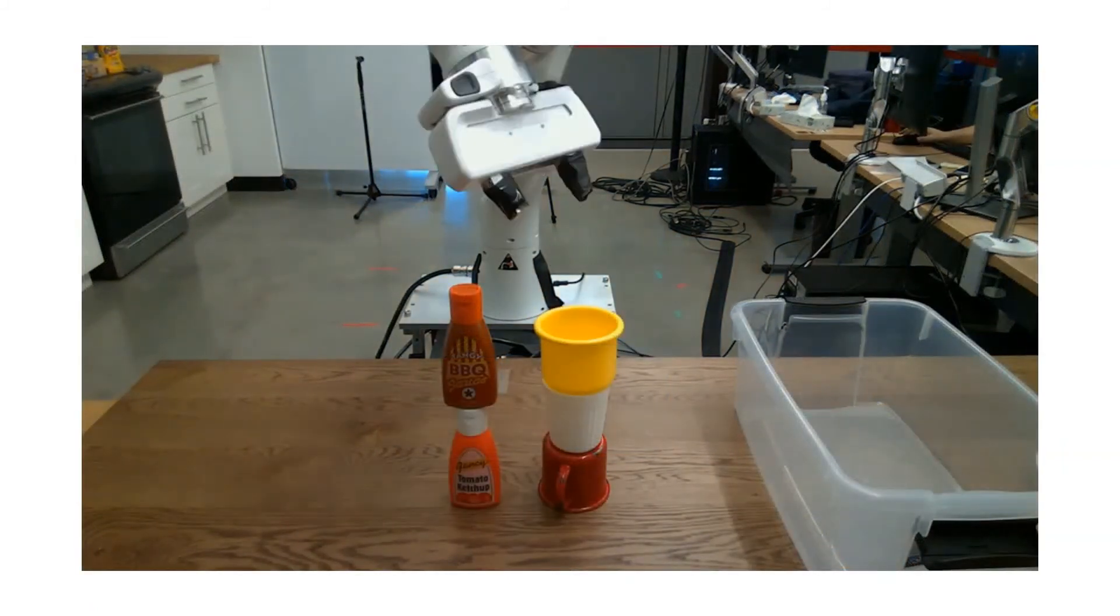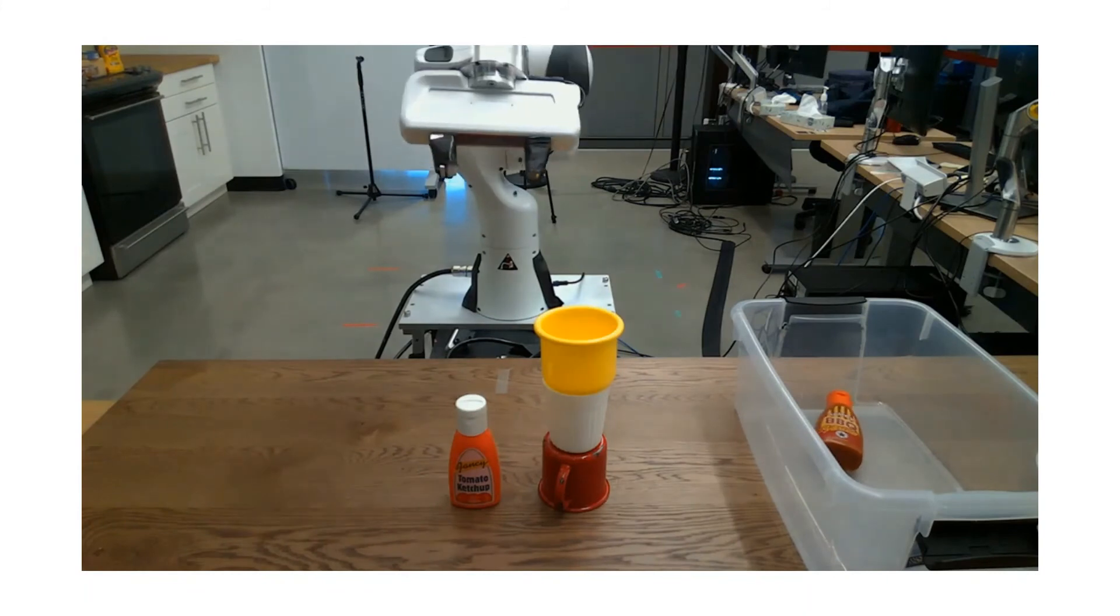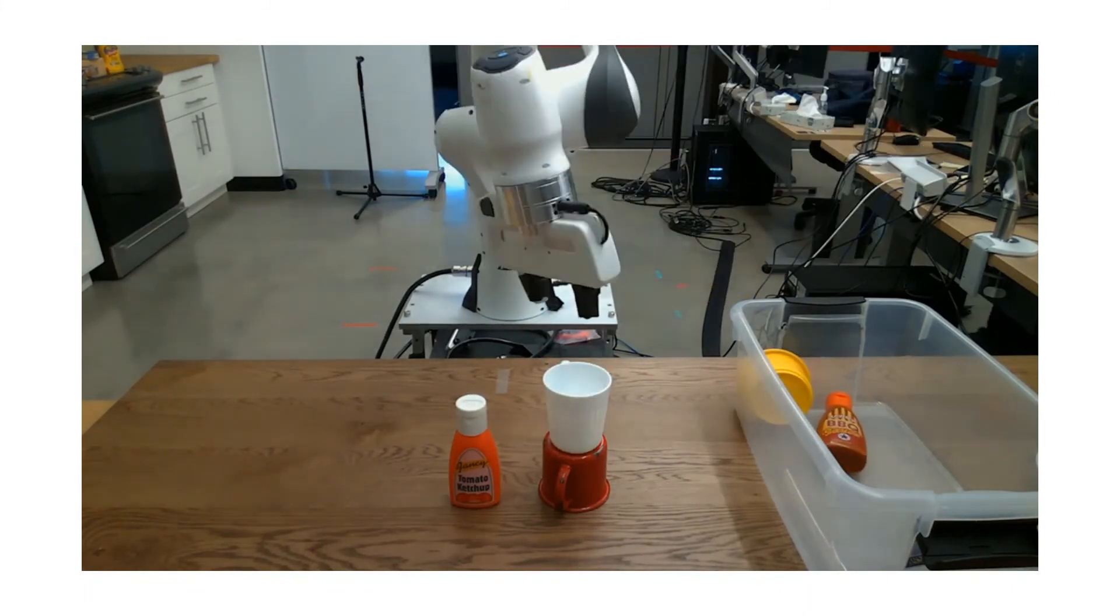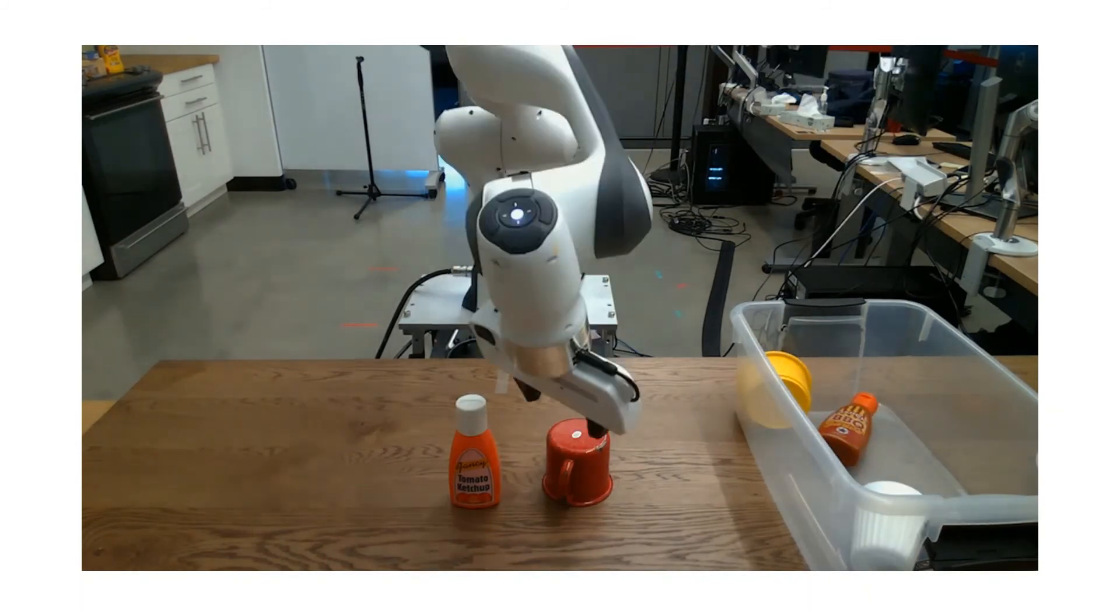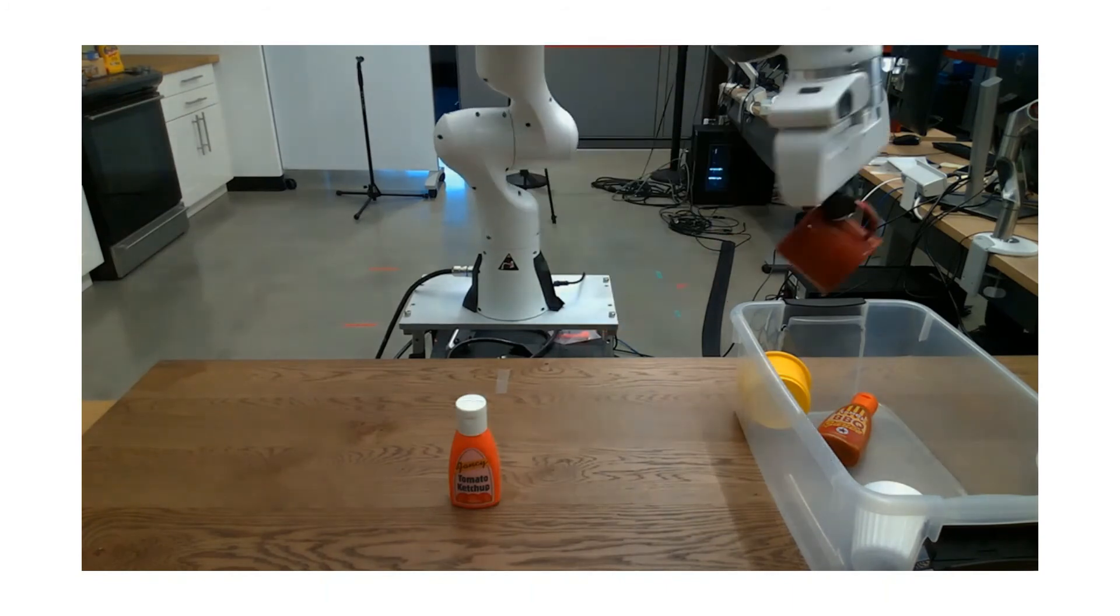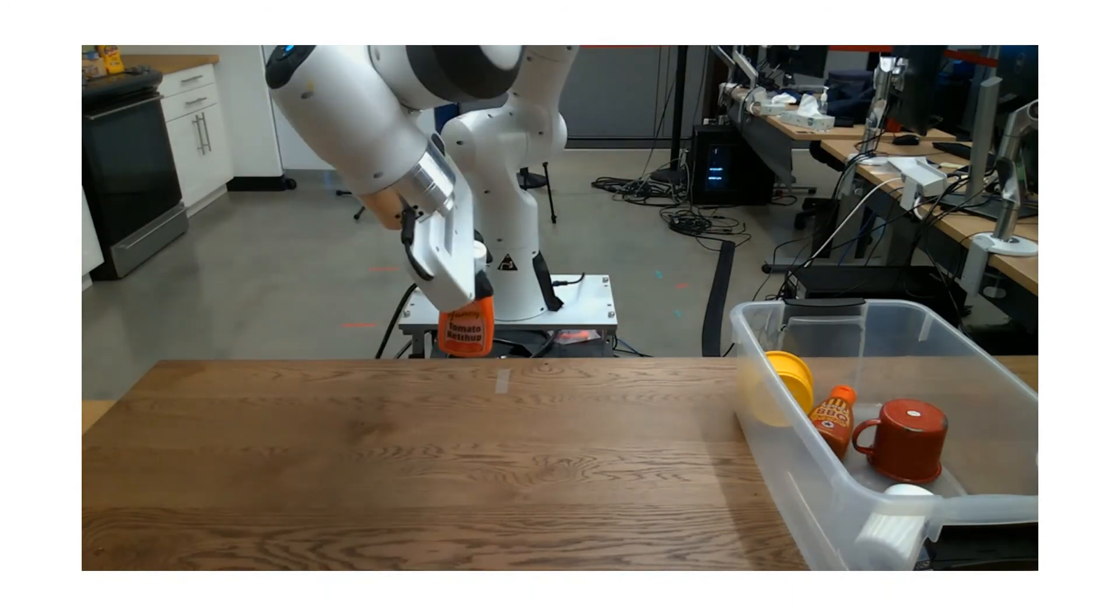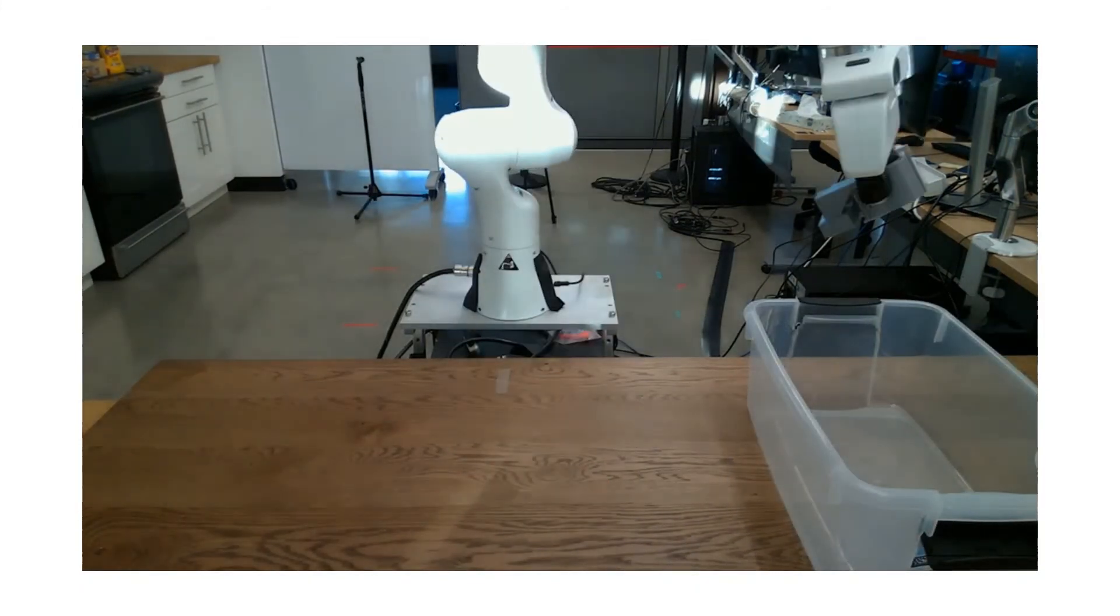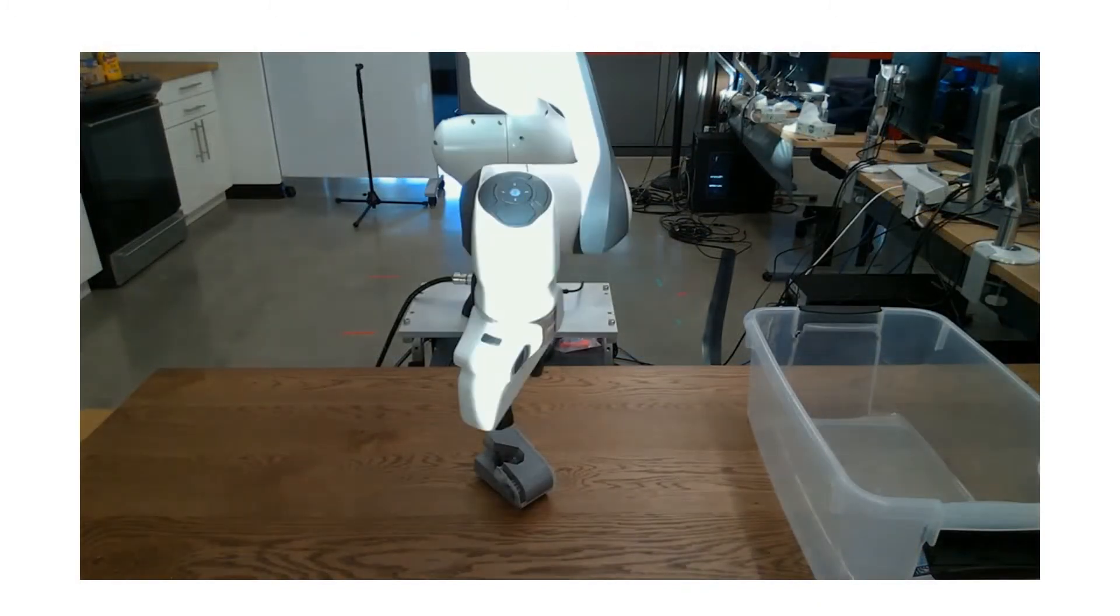Even for stacked scenes, which have not been part of the training set, Contact-GraspNet finds non-colliding grasps and successfully clears the table. We 3D printed adversarial objects from Mahler et al. and observed that they could also be picked up without problems.